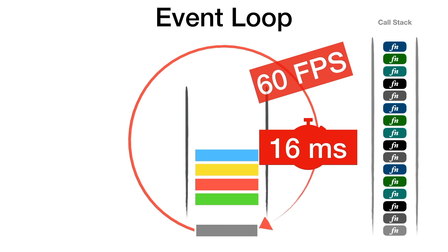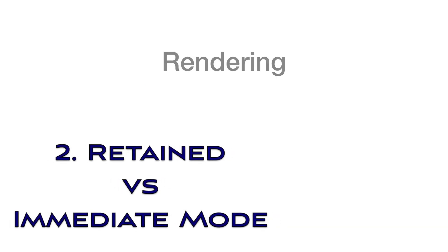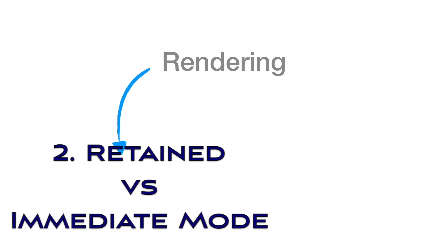The event loop is really the beating heart of a UI, and all good things come straight from the heart. In the next lesson, we will focus on rendering, one of the two main operations of any UI.